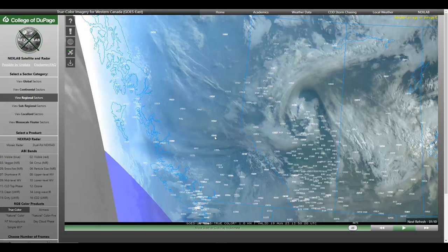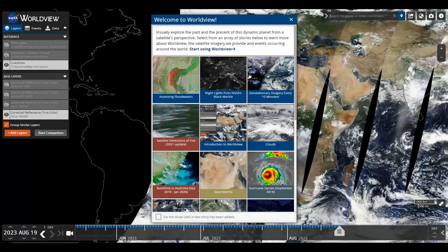However, the GOES satellite is not the only way to view from outer space what's going on in these areas. Today we're going to look at another product from NASA called WorldView and go through how to set it up and why it's a good alternative to looking at wildfires from space.